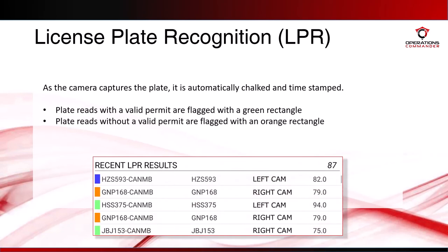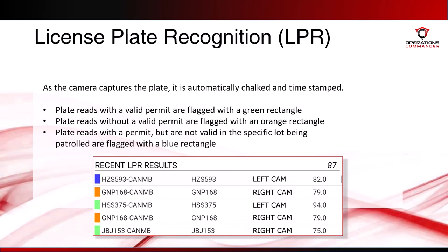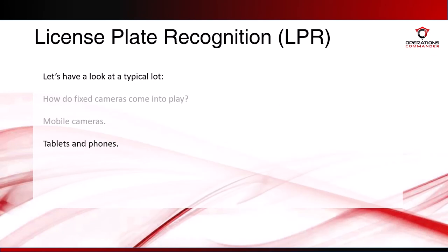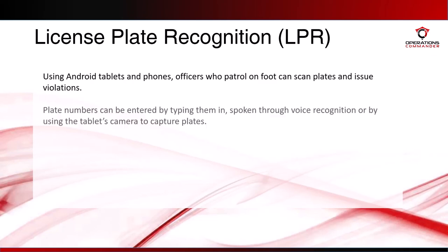Let's have a look at handheld units, such as phones and tablets. Using Android tablets and phones, officers who patrol on foot can scan plates and issue violations. Plate numbers can be entered by typing them in, spoken through voice recognition, or by using the tablet's camera to capture the plate. Similar to the mobile patrols, officers can scan plates using the handheld units, where they can see details about the vehicle in question and determine if the vehicle owner has a valid permit.